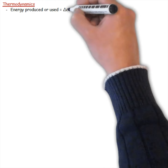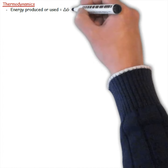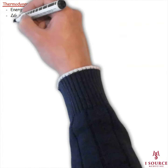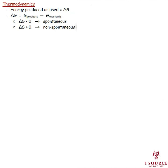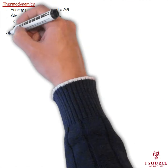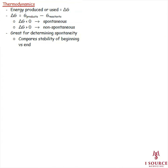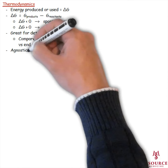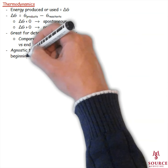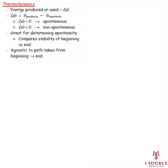Thermodynamic properties are concerned only with how much energy will be produced or used up over the course of a reaction, and so really only care about the net energy difference between reactants and products. This is why you'll frequently hear instructors call thermodynamic equations state functions, because they describe the difference between the beginning state and the ending state, but are agnostic to everything in between. So thermodynamics are great for determining the favorability of a reaction, but complete garbage when it comes to discussing how long the reaction will take.